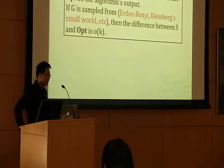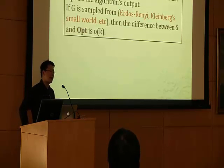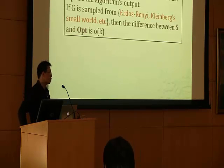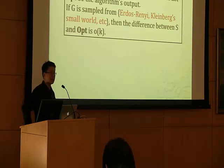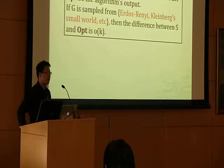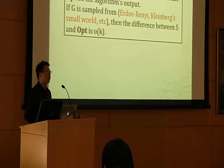Here is our first main theorem. If the graph is generated from a wide range of stochastic processes — such as the Erdős–Rényi graph, Kleinberg small-world graph, or any other homogeneous graph — then with very high probability, the optimal output of the prize-collecting Steiner tree problem will have very little difference compared to the true community. Specifically, the size of the symmetric difference between the two sets grows sublinearly in the size of the community.